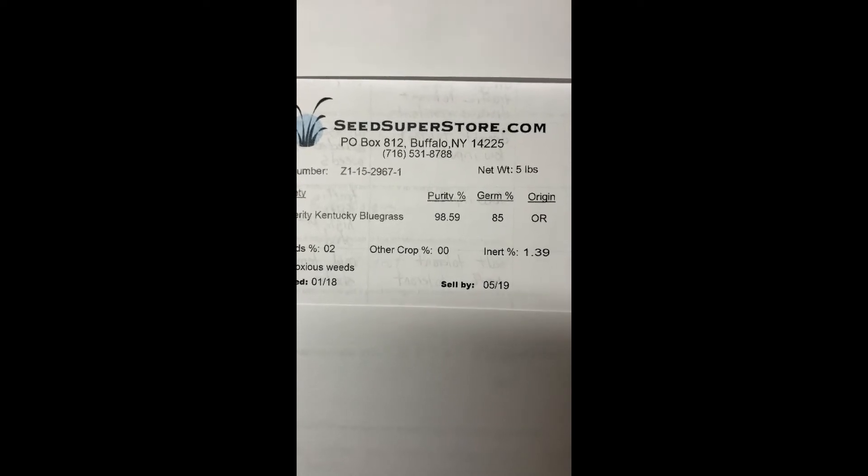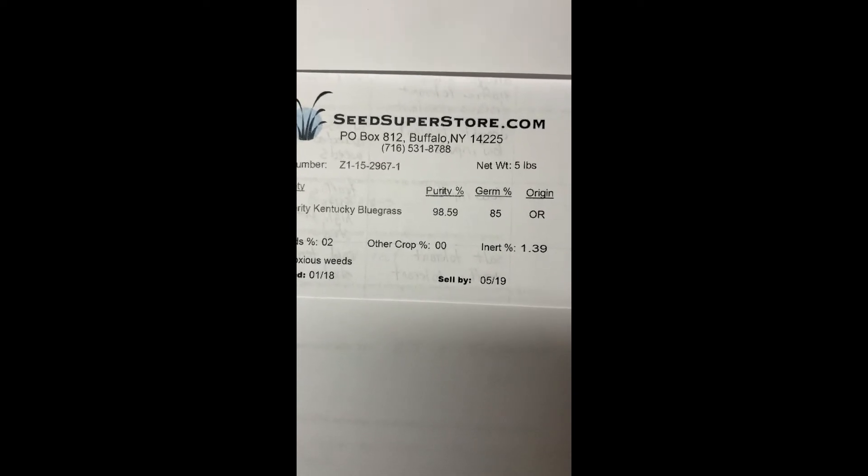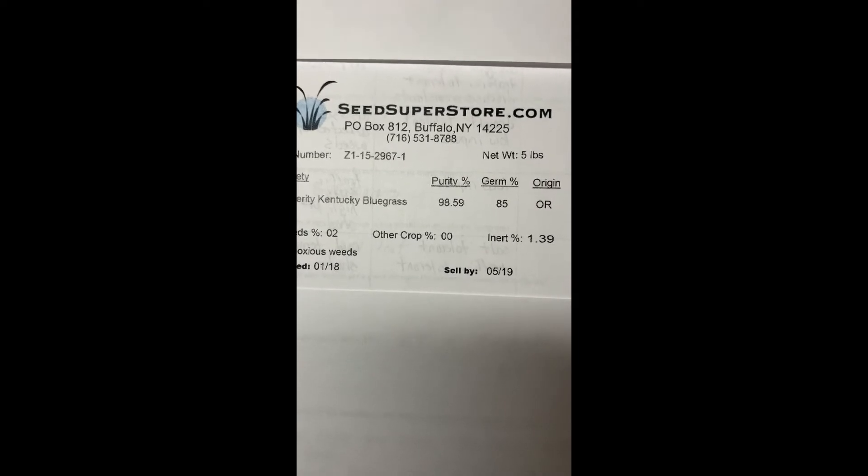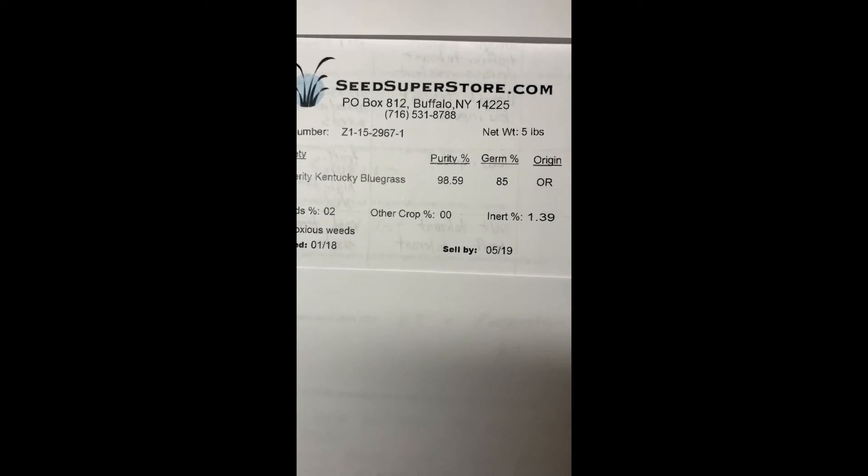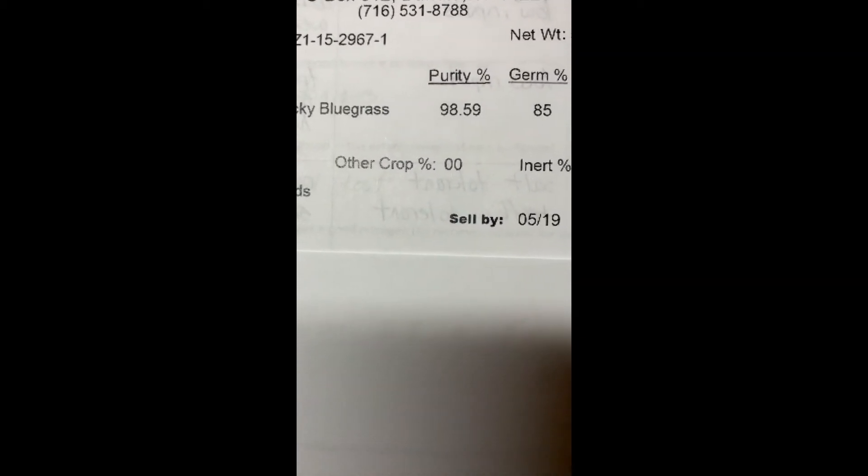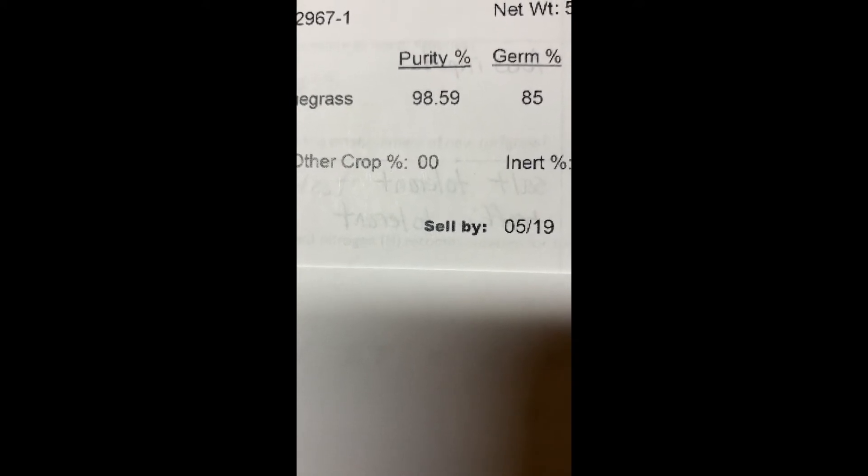Greetings everyone, we're looking at a seed label from a provider called SeedSuperstore.com and the label is for a variety called Prosperity Kentucky Bluegrass. From this label we can see that the percent purity is 98.59% and the percent germination is 85%.